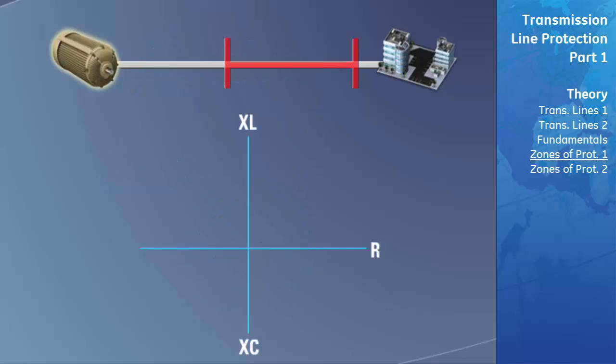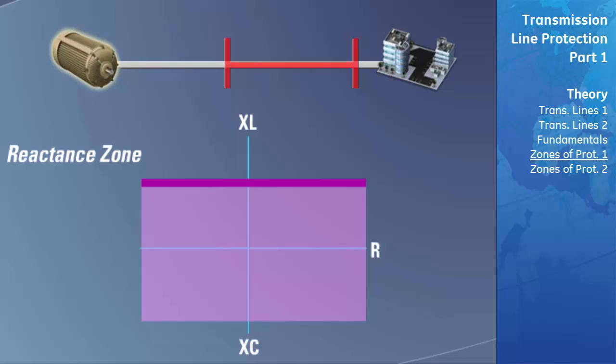The zone of protection shown here is known as a reactance zone. This type of zone is used to detect when the impedance of the fault has a very high resistive component in it. If the fault does have a high resistive impedance, this indicates that there is a load on the transmission line and the fault is most likely not on the transmission line. This type of zone is usually never used to trip a transmission line on its own but is normally used to supervise another distance zone of protection.